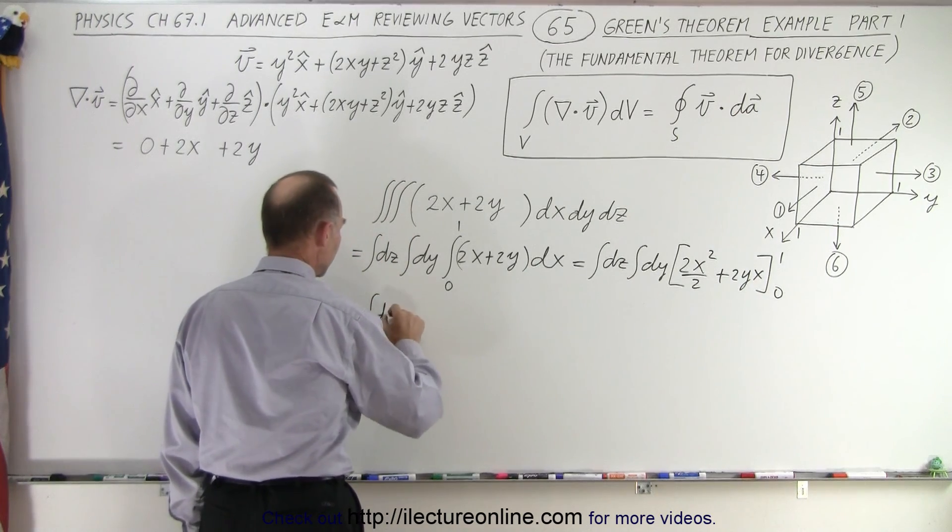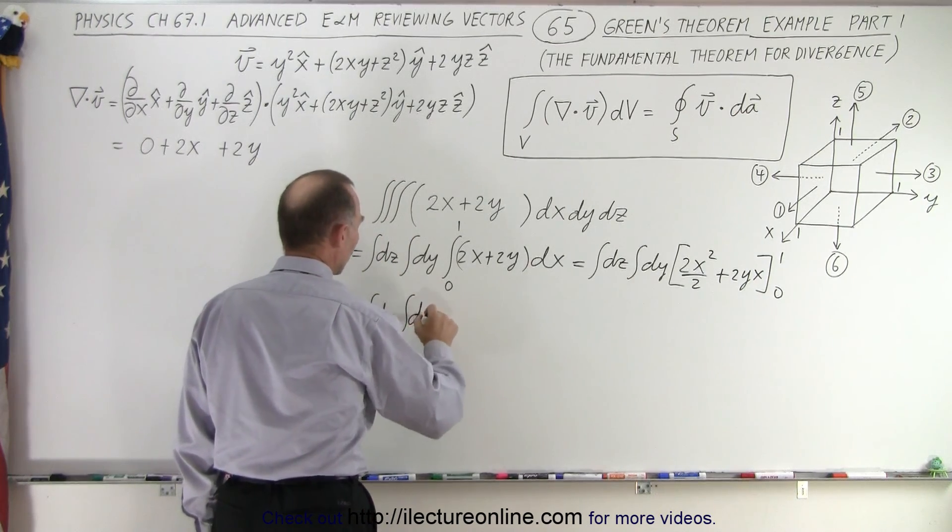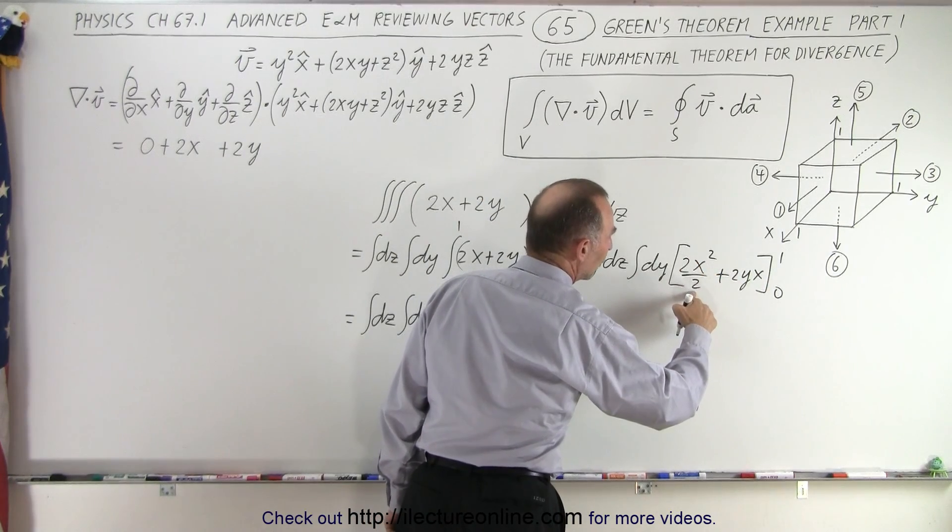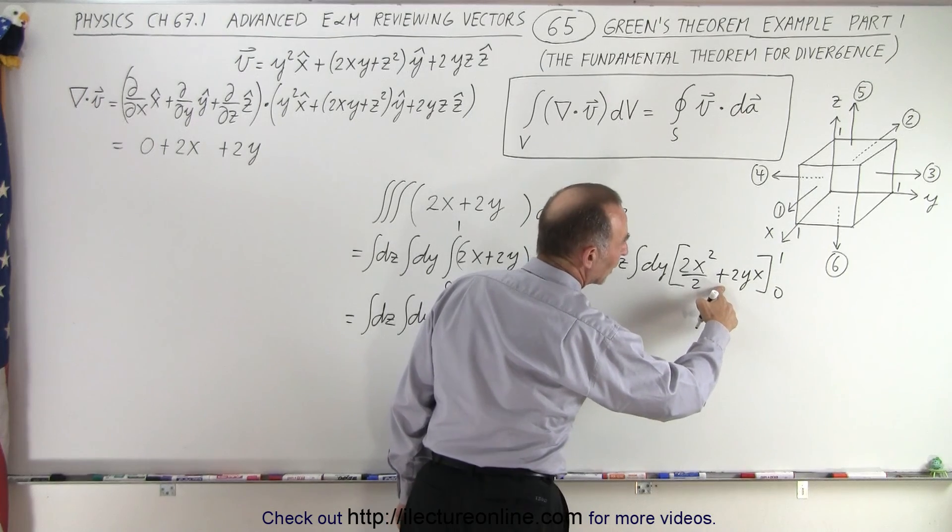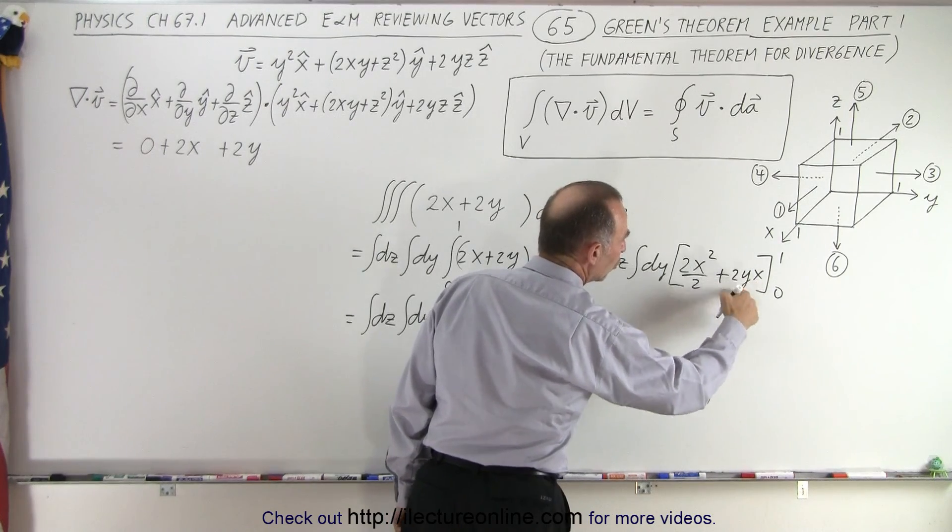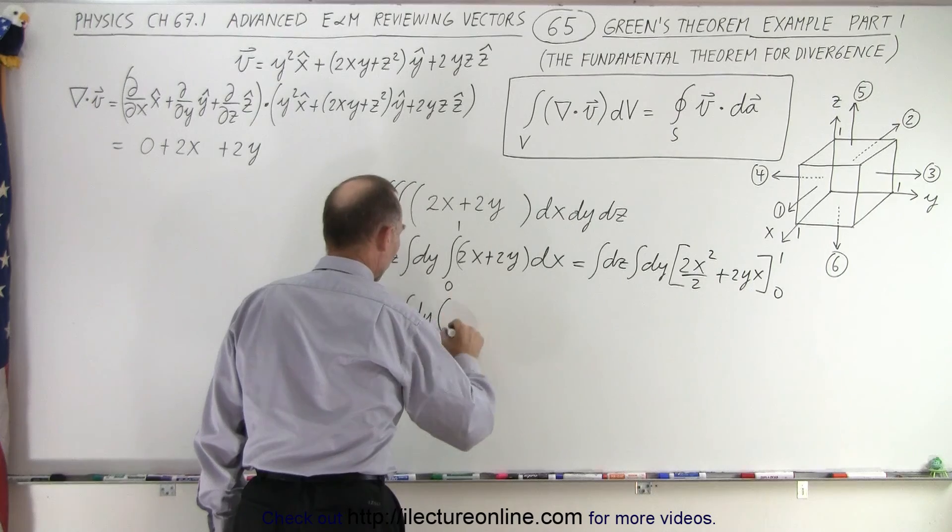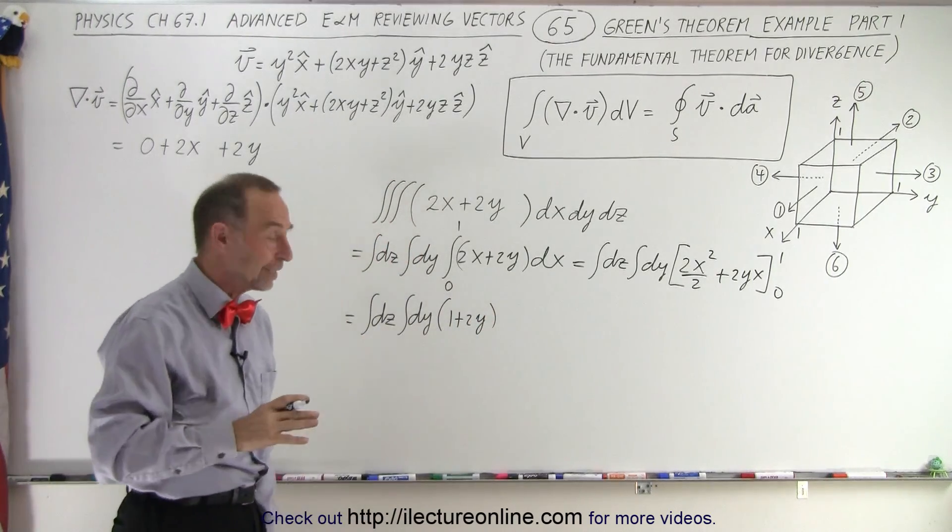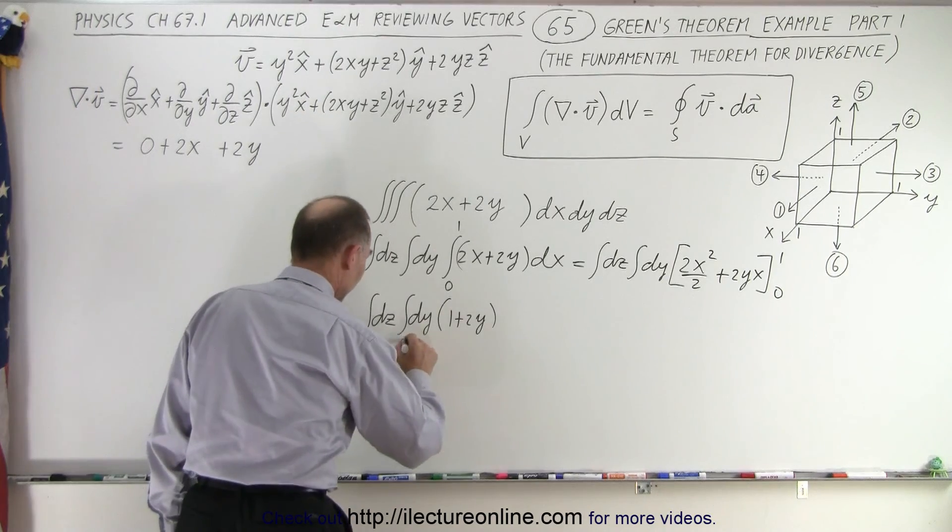We get the integral of dz times the integral of dy times, plug in the upper limit we get 2 divided by 2 which is 1 plus, here we get 2y, so we get the quantity 1 plus 2y which we're now going to integrate over the y variable from 0 to 1.